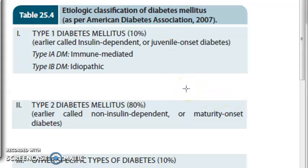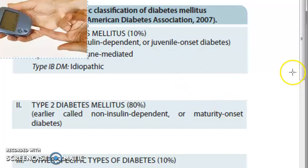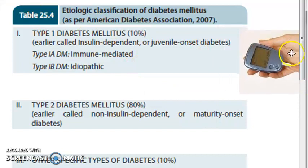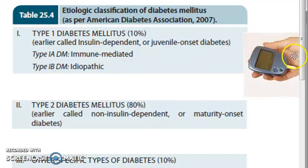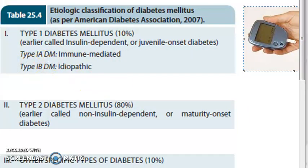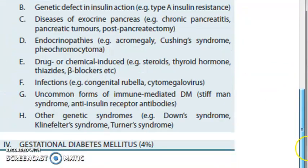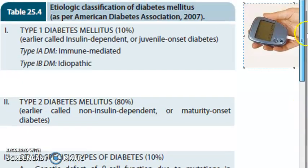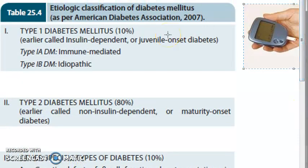In the last video we started off with diabetes mellitus - the definition. In this video we want to look at the classification and etiology of diabetes mellitus. This is an etiological classification. We have type 1 diabetes mellitus, type 2 diabetes mellitus, other specific types of diabetes, and gestational diabetes mellitus.